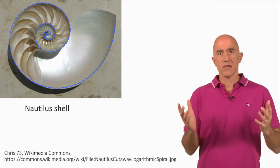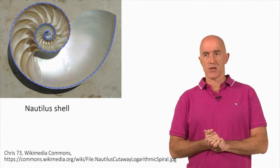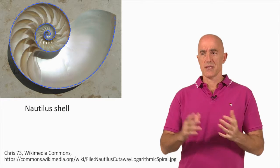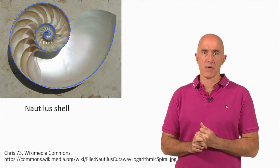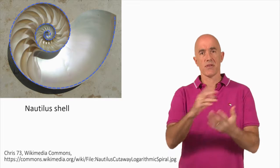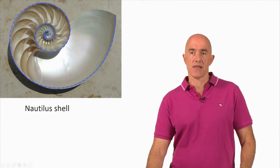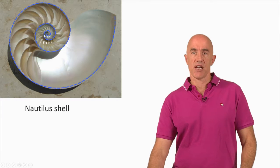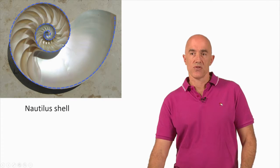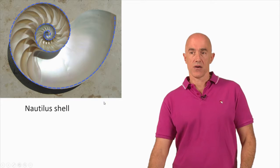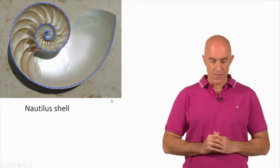Because of that property, the logarithmic spiral shows up in nature. This is a picture of the nautilus shell taken from Wikipedia. We can see that the nautilus shell grows in such a way that it traces out a logarithmic spiral — a very beautiful picture.